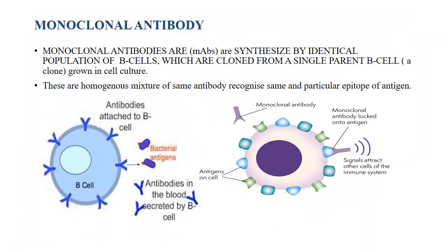Now let's discuss the monoclonal antibody. Monoclonal antibodies are synthesized by an identical population of B-cells which are cloned from a single parent B-cell — meaning all antibodies are synthesized from a single parent B-cell. This antigen contains different types of epitopes, such as a triangular epitope and a rectangular epitope, but this monoclonal antibody synthesized from a single parent B-cell recognizes only the triangular epitope — it recognizes only a single epitope.